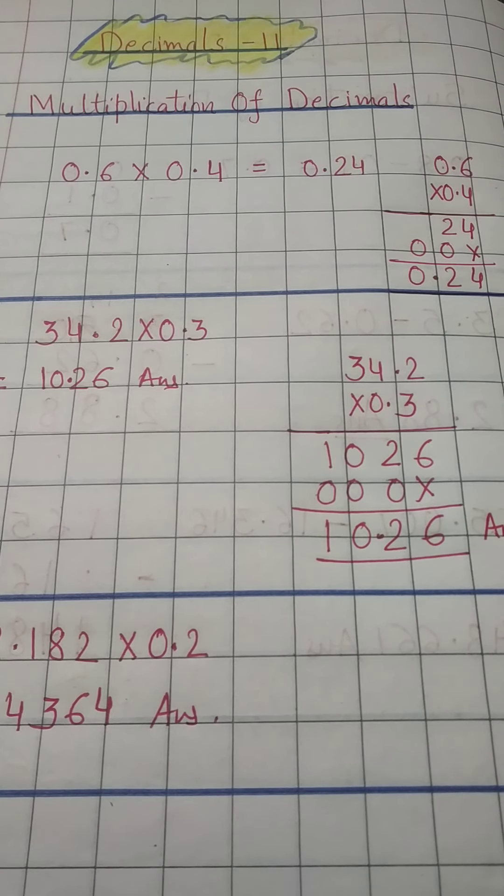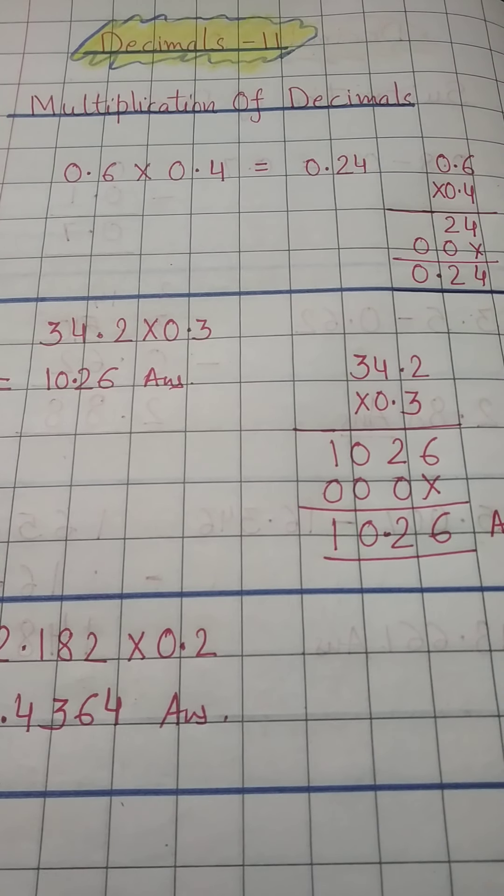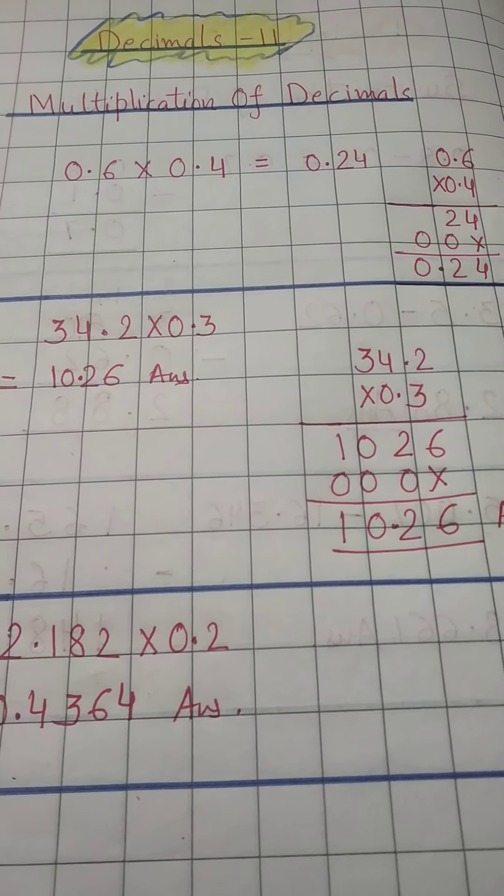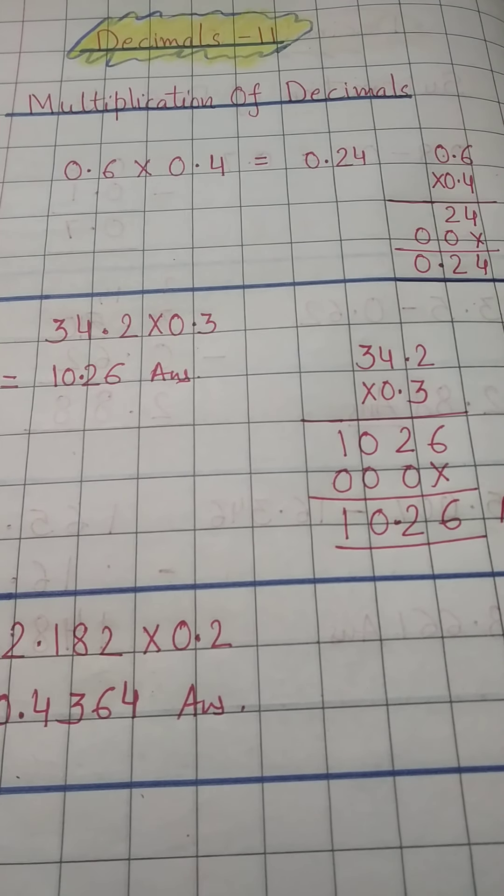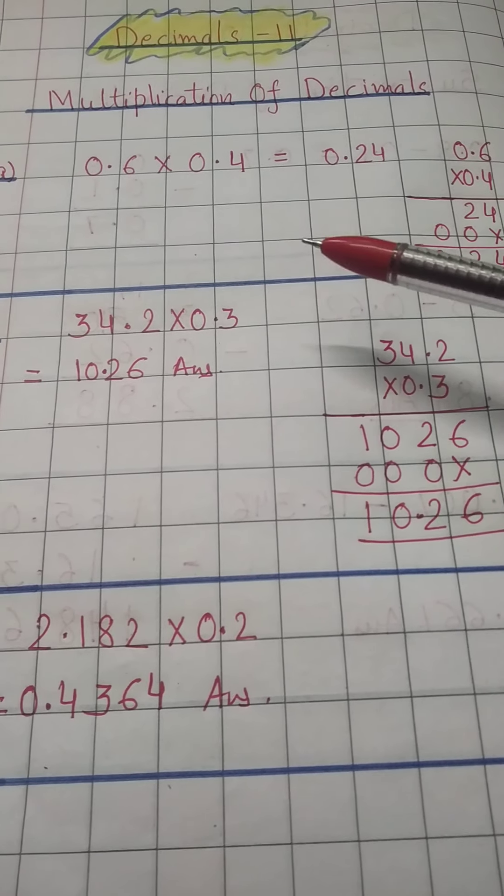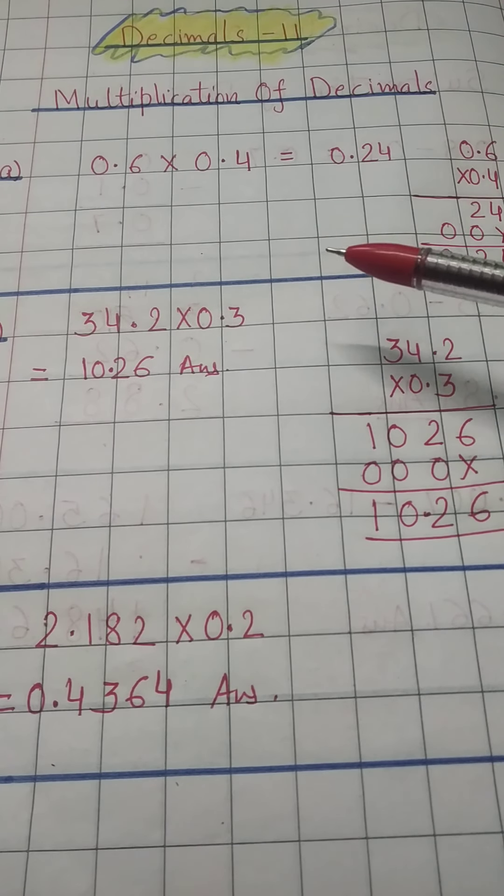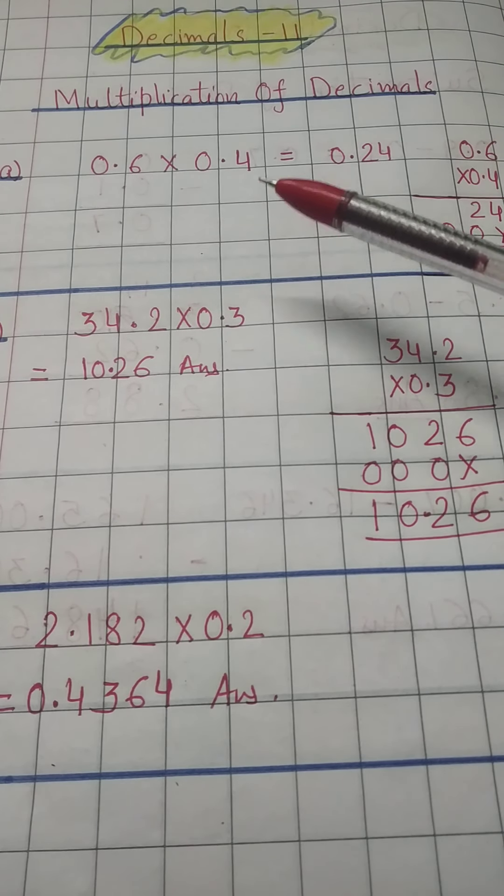We have done addition, subtraction, like fraction and unlike fraction, so I hope you can compare the numbers very easily. So here first question, multiplication of decimals: 0.6 into 0.4.